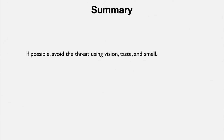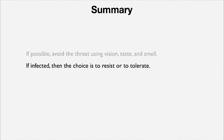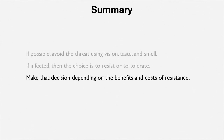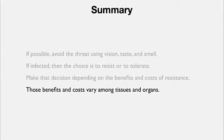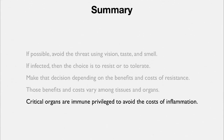To summarize, a set of rules of thumb on how to think about defense: if possible, avoid the threat, and do that with the sensory system. If infected, then the choice becomes resist or tolerate. That choice is made depending on the benefits and costs of resistance, and those benefits and costs vary among tissues and organs. The critical organs are immune-privileged, and they avoid the costs of inflammation.